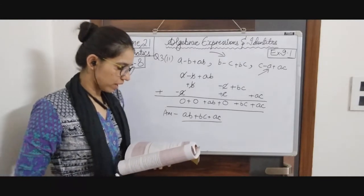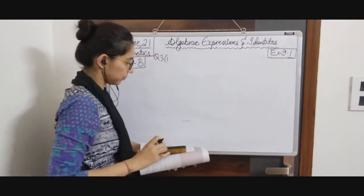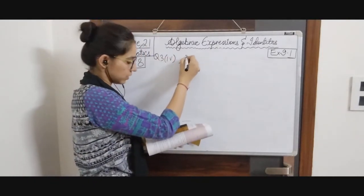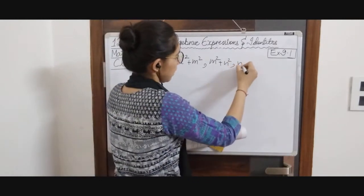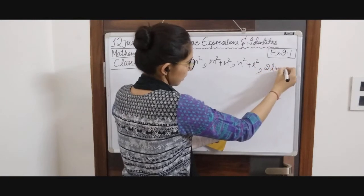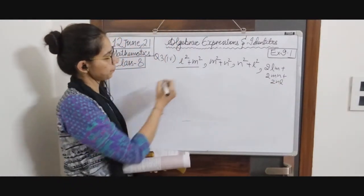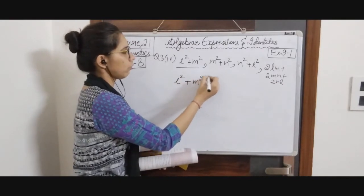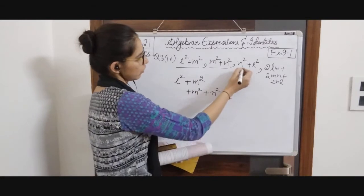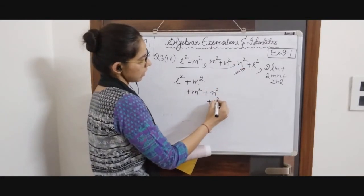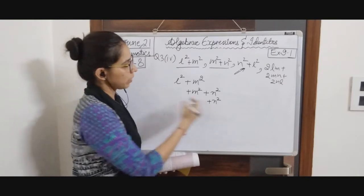Next we are going to do part 4 of question number 3. The terms are L² plus N², M² plus N², the third expression is N² plus L², and the fourth expression is 2LM plus 2MN plus 2NL. We start with the first expression L² plus N², then pick M² and place it with N² since there is no like term for N² yet.